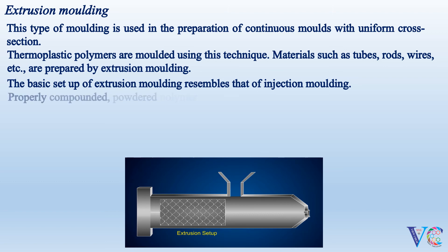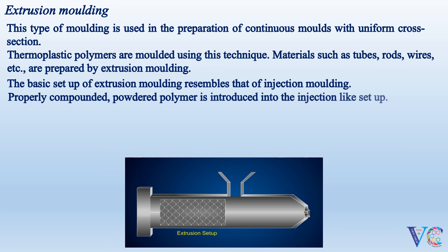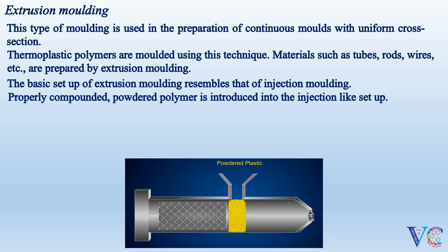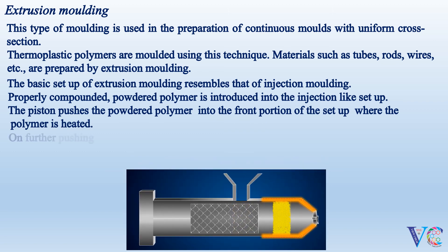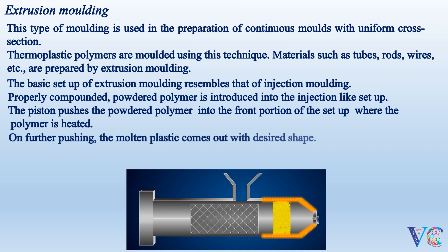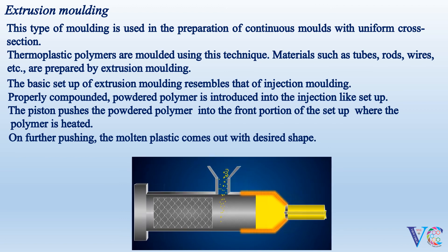Properly compounded powdered polymer is introduced into the injection-like setup. The piston pushes the powdered polymer into the front portion of the setup where the polymer is heated. On further pushing, the molten plastic comes out with the desired shape. In this manner, the process can be continued.